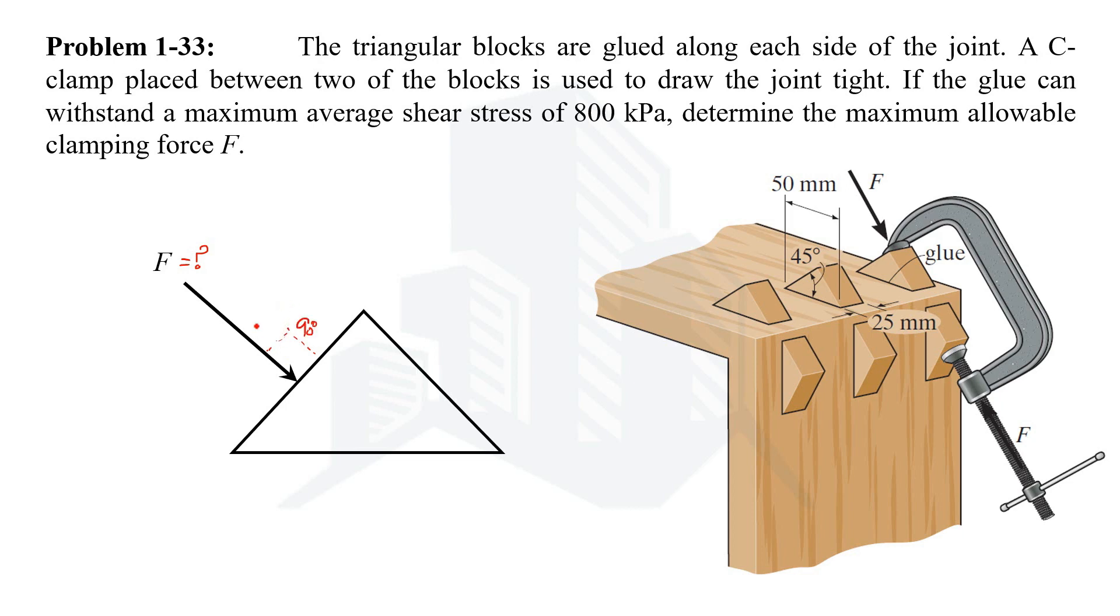Total angle would be 90 degrees. So we can resolve this force in terms of its horizontal component and vertical component. Let's name the horizontal component as FH and vertical component as FV. Since this angle is 45 degrees that we can see in this triangle, then this angle will also be 45 degrees.